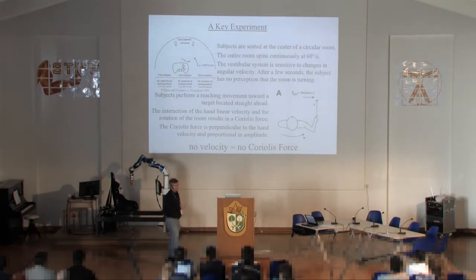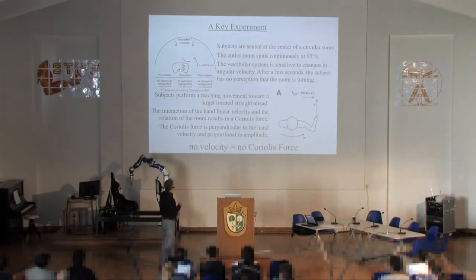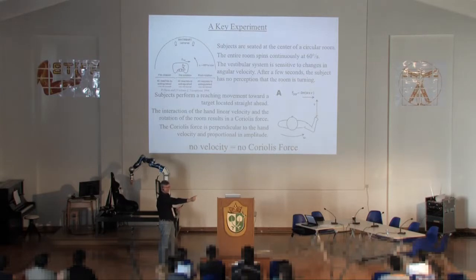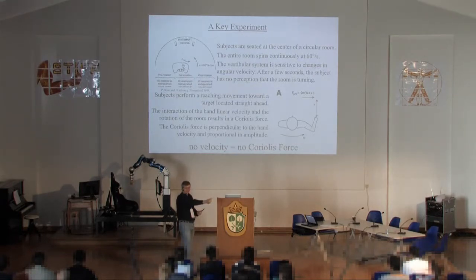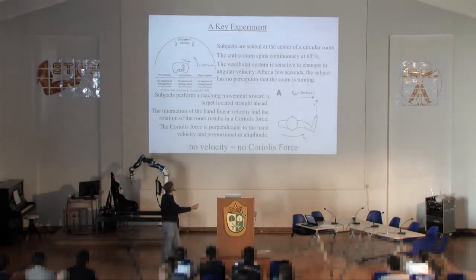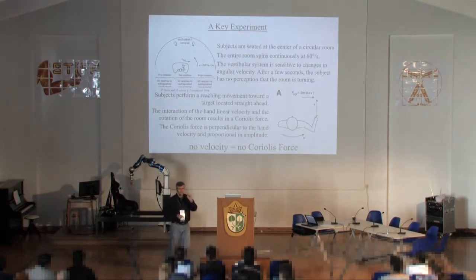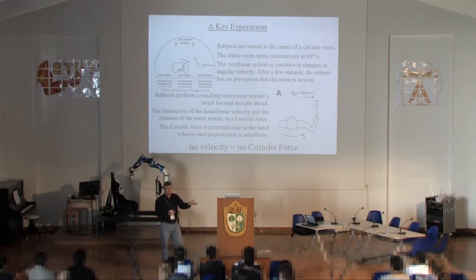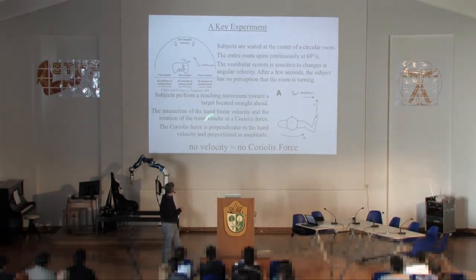Subjects sat in the center of the room to avoid centrifugal forces. They first performed point-to-point hand movements with the room stationary. Then the room was spun up, and after a couple of minutes — so all transient vestibular signals died out — subjects moved their hand again in point-to-point movements. The target was shown, but during movement there was no visual feedback about the hand. This Coriolis force then acted during movement.